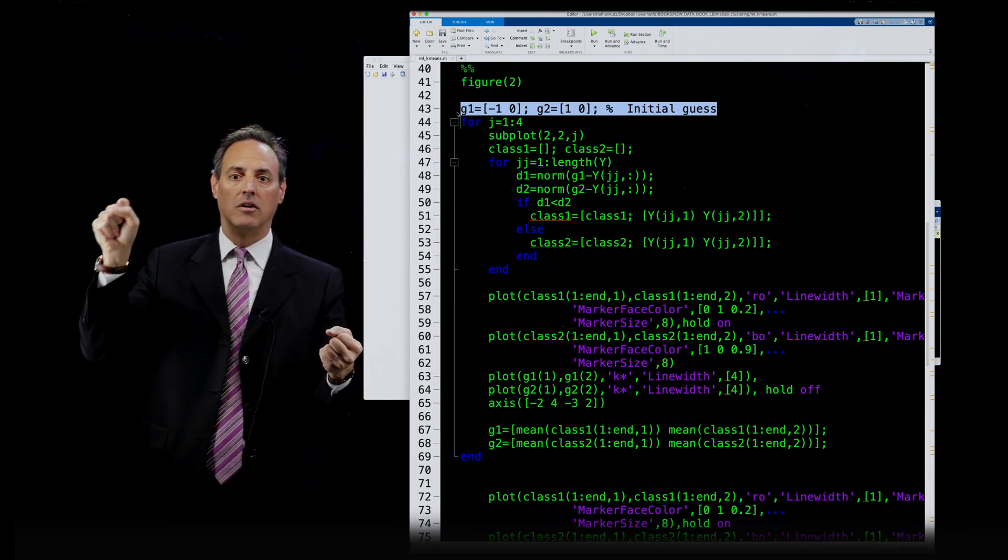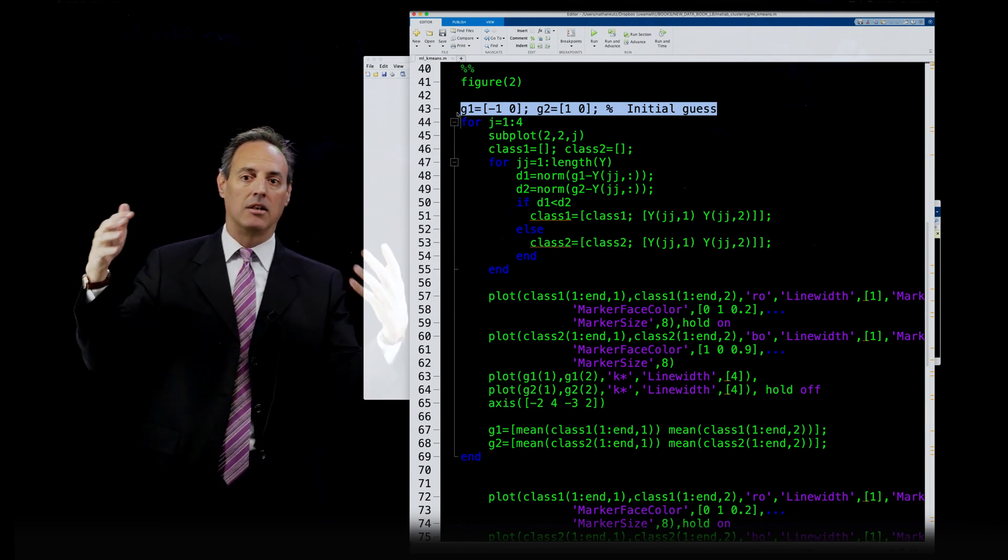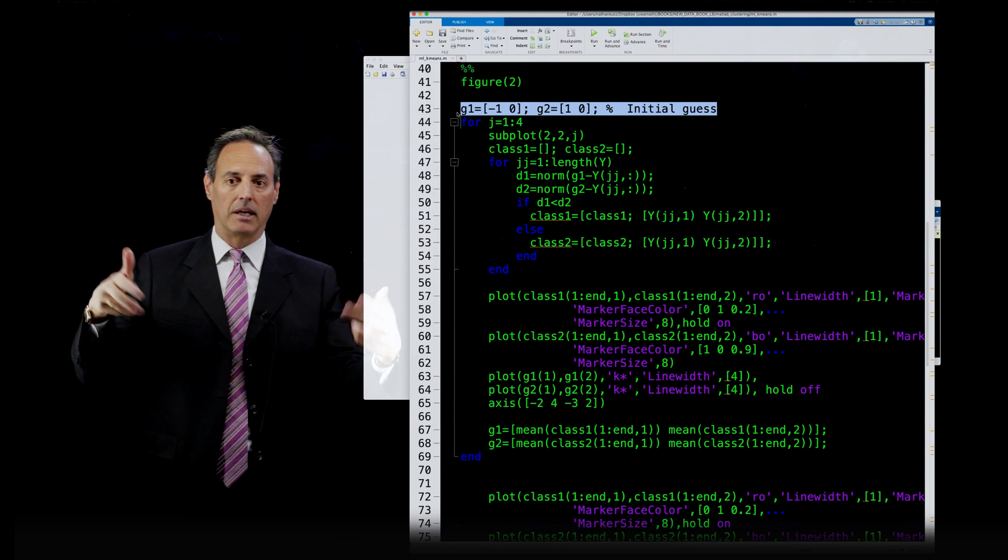And then what I do is take all the data from this point and look at its centroid. In other words, where its center of mass is, move my point over to the center of mass, move this to the center of mass, and execute the algorithm again.